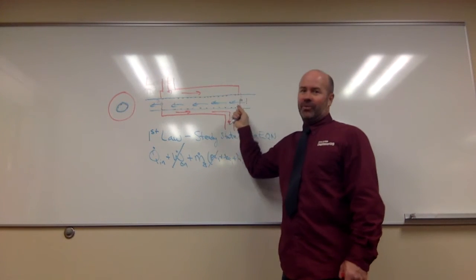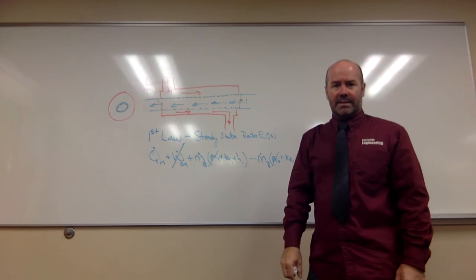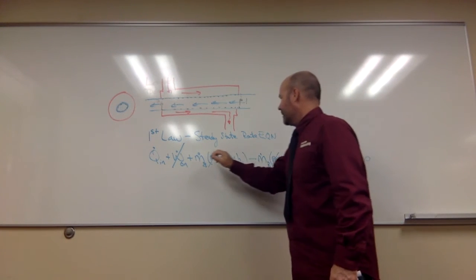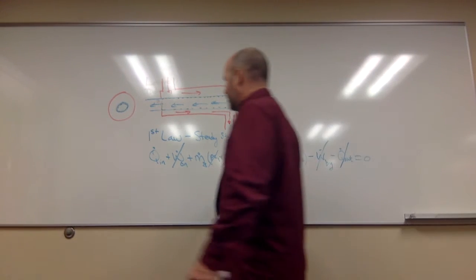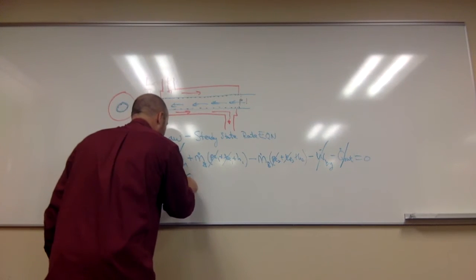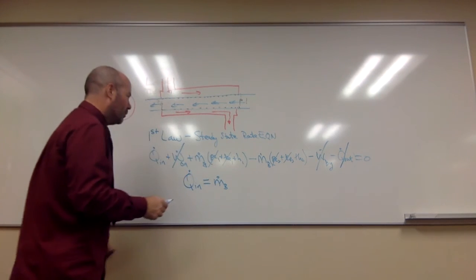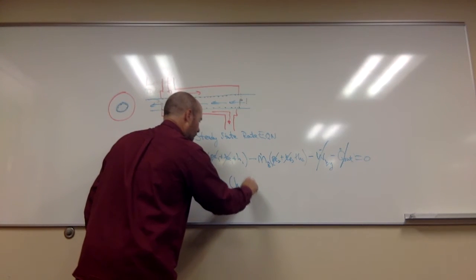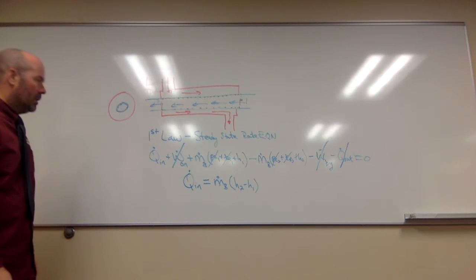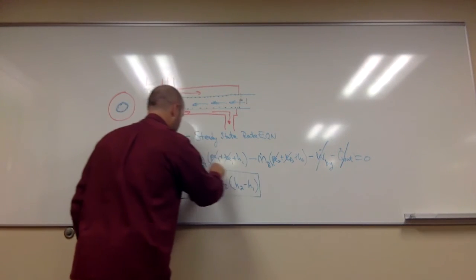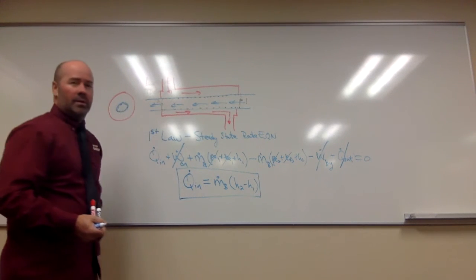So there is no change in potential energy. And the diameter of the pipe is staying the same. And what might not look like it. But if the diameter stays the same, the velocity stays the same. And if the velocity stays the same, the kinetic energy stays the same. And now we simplify this. We rewrite the equation. We say the rate of heat transfer into the fluid is equal mass flow rate of the fluid times enthalpy 2 minus enthalpy 1. And I've rearranged and brought those to the other side of the equation.